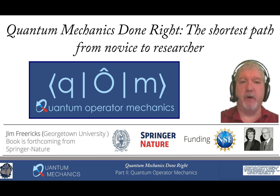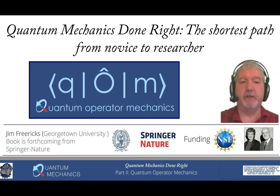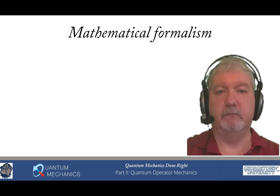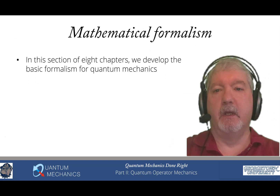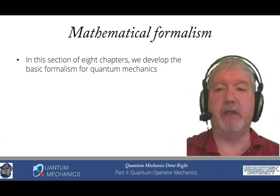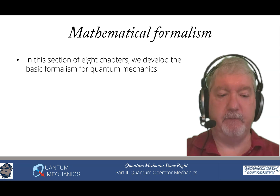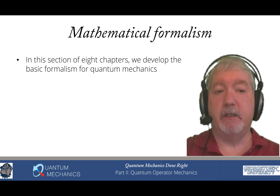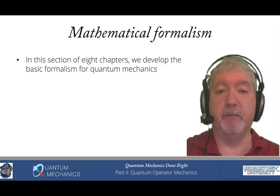Welcome to the ninth video of Quantum Mechanics Done Right: The Shortest Path from Novice to Researcher. We're now going to describe the material that forms part two of the book. We're finished with the conceptual ideas and the conceptual part of the book, and we're moving on to what I call quantum operator mechanics. The second part contains eight chapters that develop the formalism for quantum mechanics — it actually forms the largest part of the book.